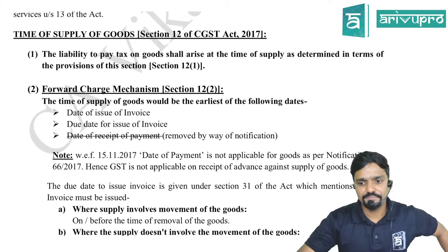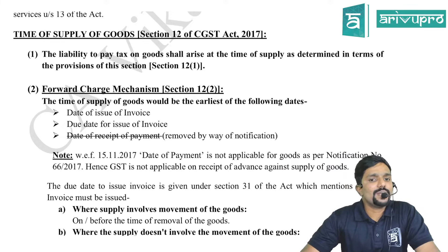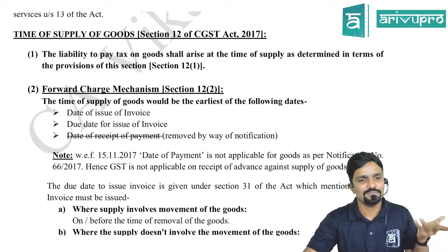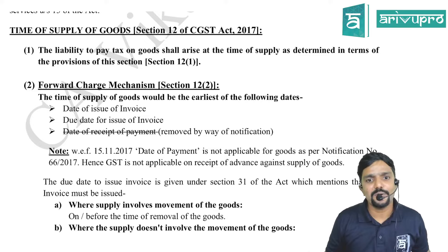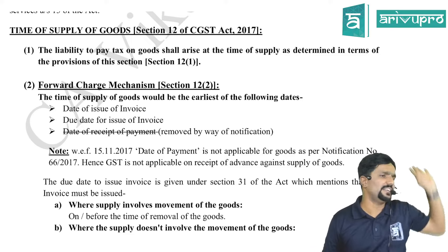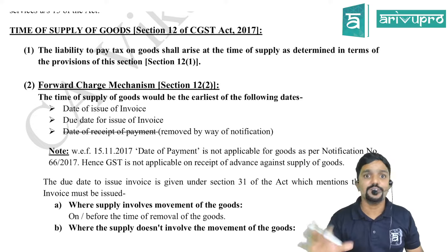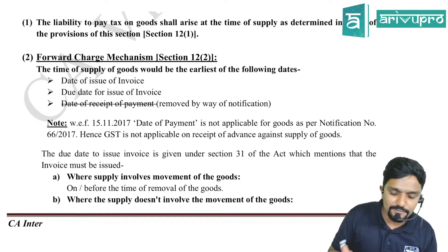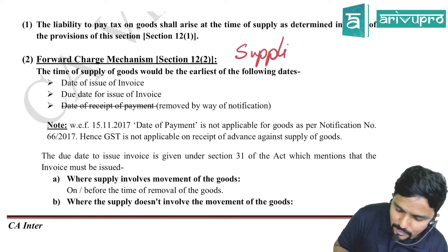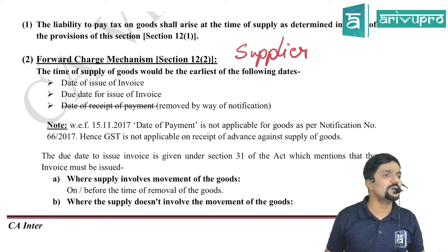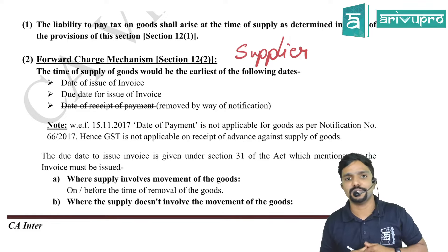Section 12 — Time of Supply of Goods. Subsection 1 states that the liability to pay tax on goods shall arise at the Time of Supply as determined in terms of provisions of this section — it is more of an editing subsection. Subsection 2 talks about the Forward Charge Mechanism. Under FCM, the supplier is liable to pay tax, so he is the one who needs to know when to pay — he has to check the Time of Supply provision.